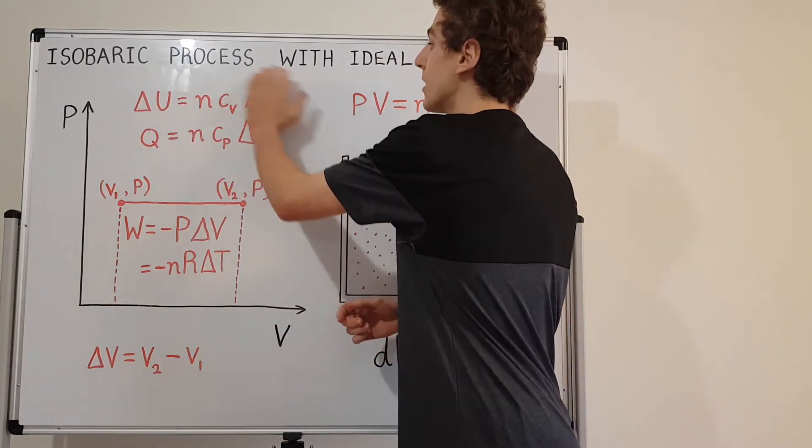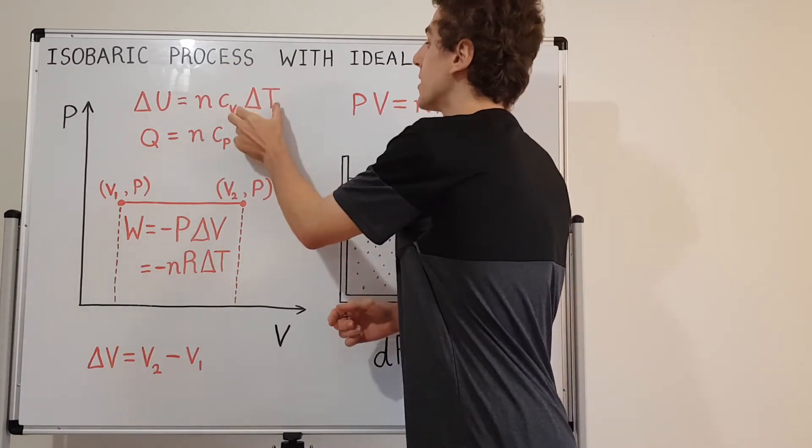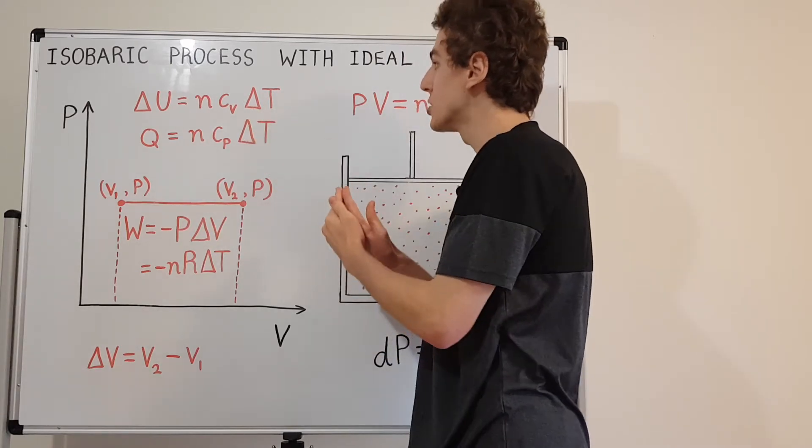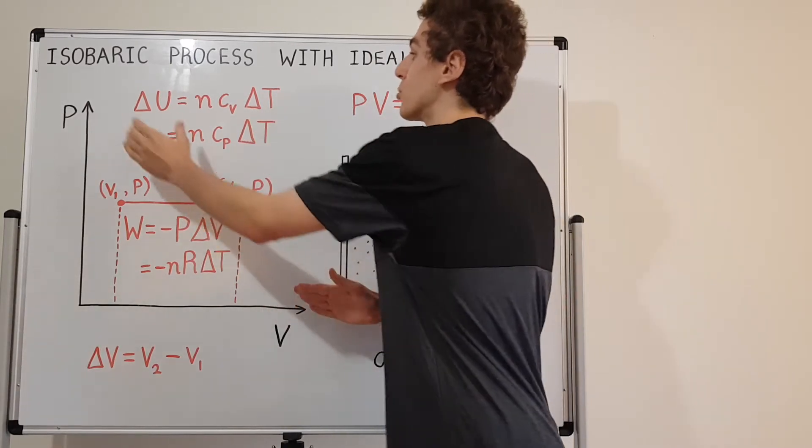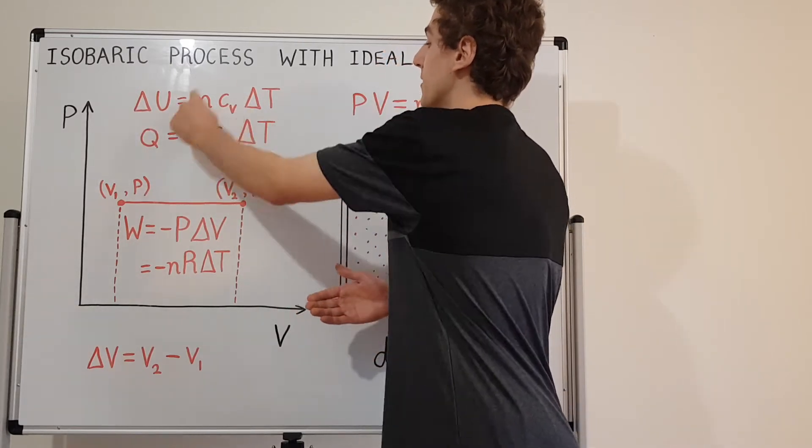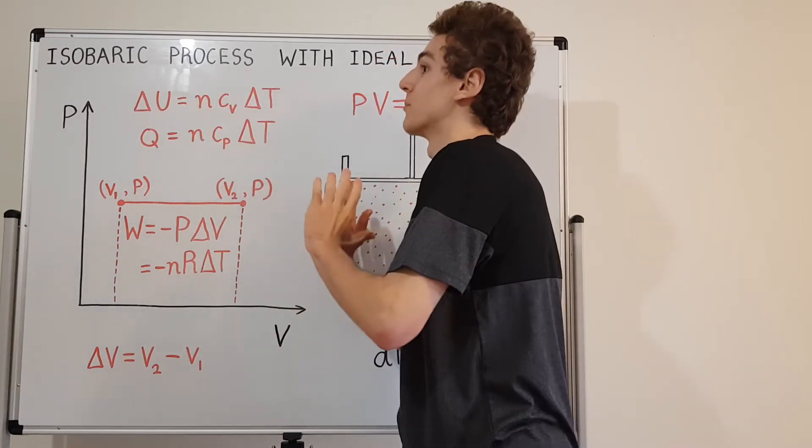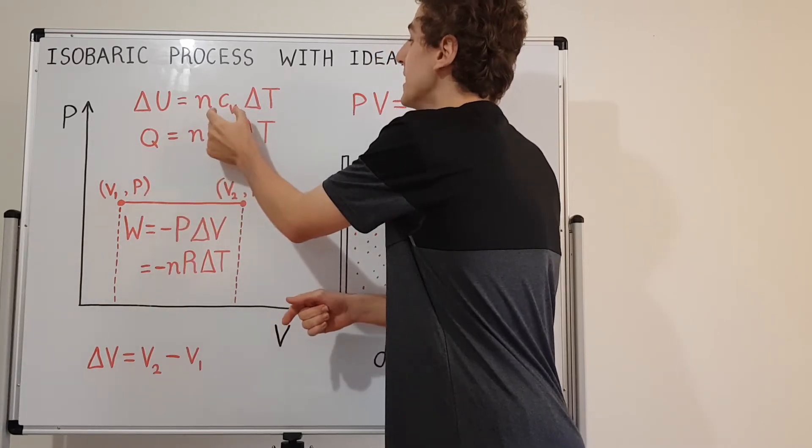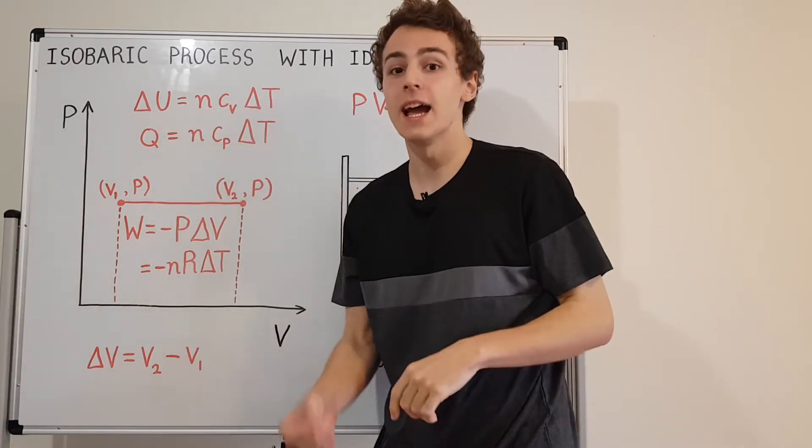So this over here is the relationship that links together the change in temperature to the change in internal energy. So if you have a tiny little change in temperature, you're gonna have a direct change in the internal energy. And the way that that change is actually going to be conveyed from delta T to delta U is by this factor. And this Cv is the specific heat capacity at constant volume.